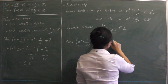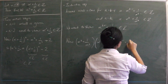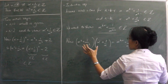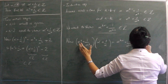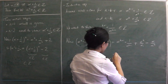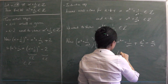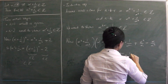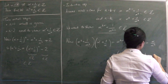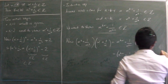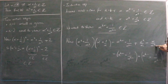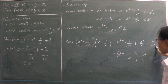So what do we get? We get alpha to the k plus 1 plus 1 over alpha to the k plus 1, plus cross terms: alpha to the k minus 1 plus 1 over alpha to the k minus 1. Because cancelling gives alpha to the k minus 1 on top, and alpha to the k minus 1 on the bottom.